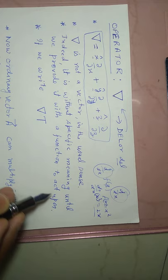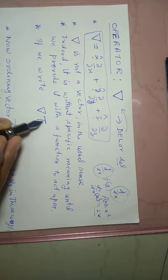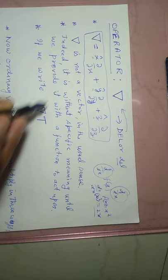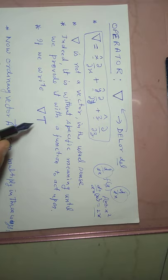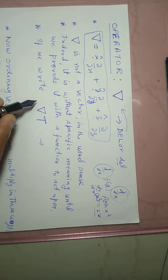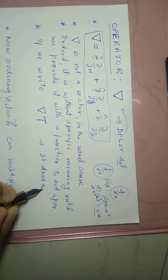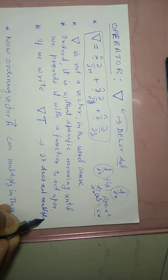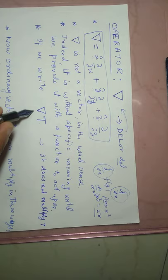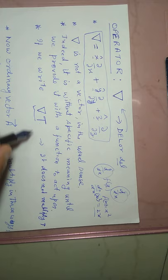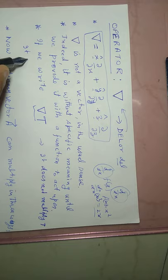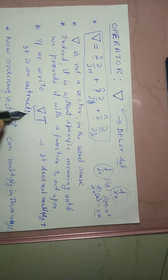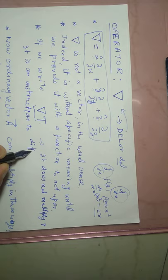For example, if T is a scalar function and I write del·T — this gradient — writing it in this way does not mean that we are multiplying del by T. It does not mean multiplication. Rather, it is an instruction to differentiate.